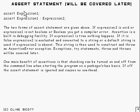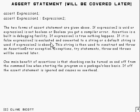For an assertion statement, if expression 1 is true then nothing happens. If it's false, then expression 2, if present, is evaluated and converted into a string. If it's not present, a default string is used, and this string is then used to construct and throw an assertion error exception.